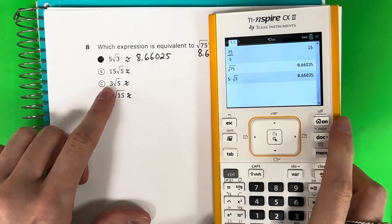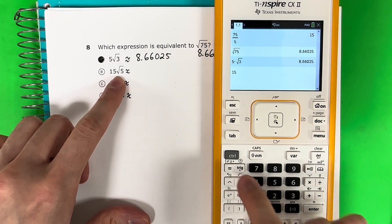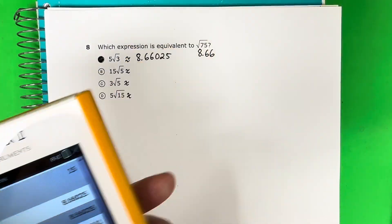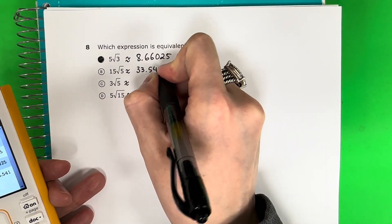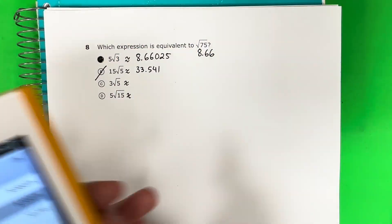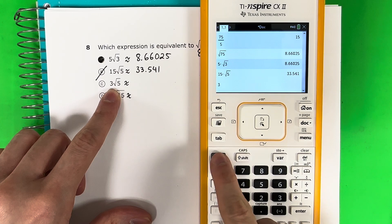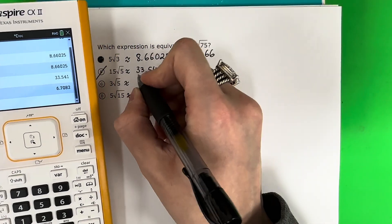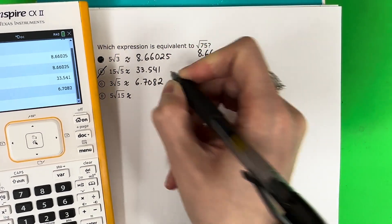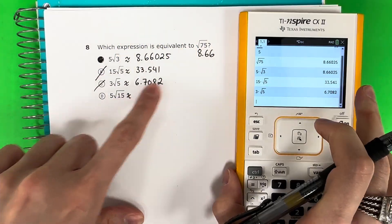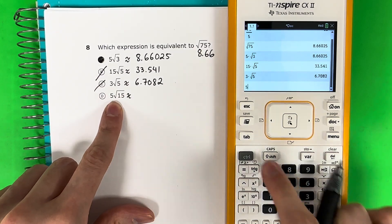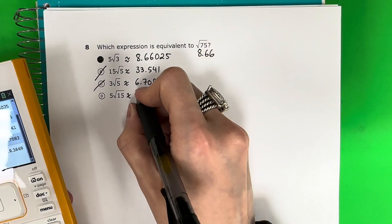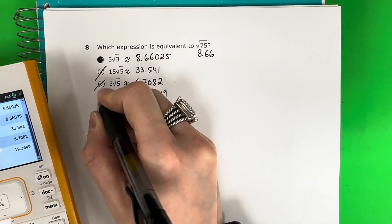Let's put in another one just to practice. This one is 15 times the square root of 5 — Ctrl, X squared, 5, enter — that gives 33.541. Completely different. Now let's do 3 times the square root of 5 — Ctrl, X squared, 5, enter. You put them in exactly as you see them. That gives 6-point-something, which is not the same as 8. And the last one: 5 times the square root of 15 — Ctrl, X squared, 15, enter — that gives 19.3649. Completely different.